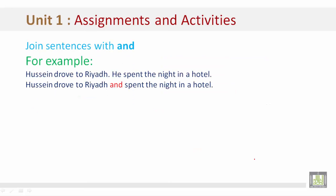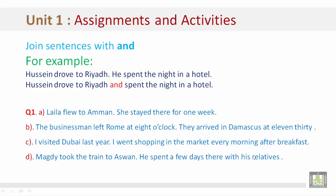Joining sentences with 'and'. For example: 'Hussein drove to Riyadh. He spent the night in a hotel.' becomes 'Hussein drove to Riyadh and he spent the night in the hotel.' Layla flew to Amman and she stayed there for one week. The businessman left Rome at 8 o'clock — remove the full stop — and they arrived in Damascus at 11:30. I visited Dubai last year — remove the full stop — and I went shopping in the market every morning after breakfast. Note: 'I' is always capitalized when it stands alone. Magdi took the train to Aswan and he spent a few days there with his relatives.